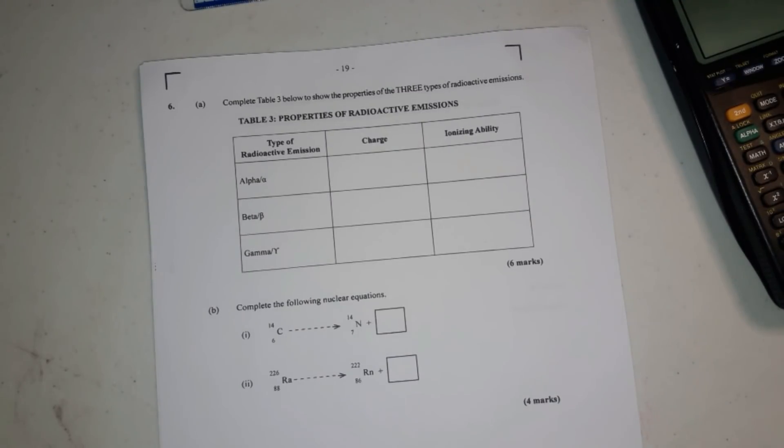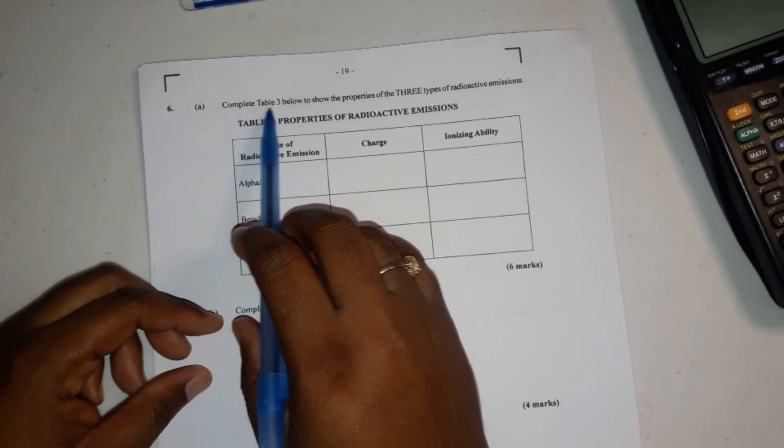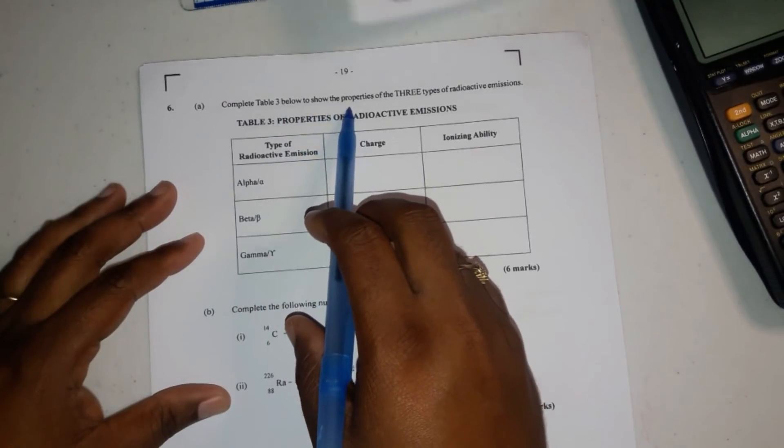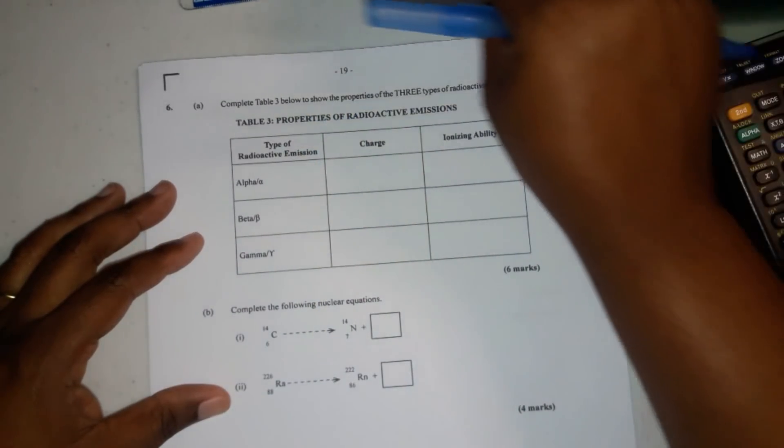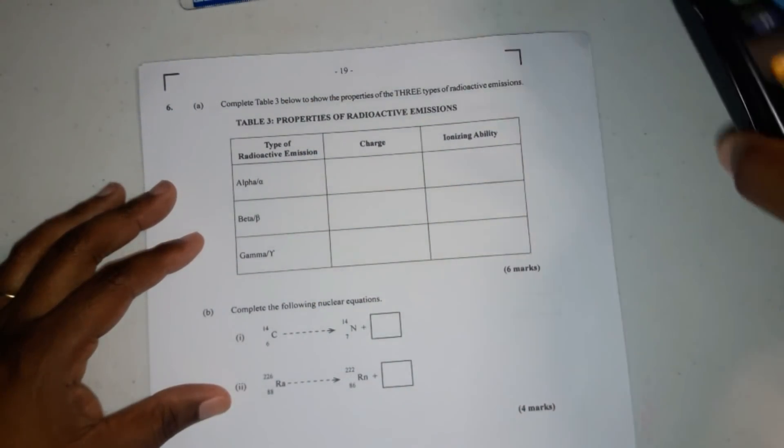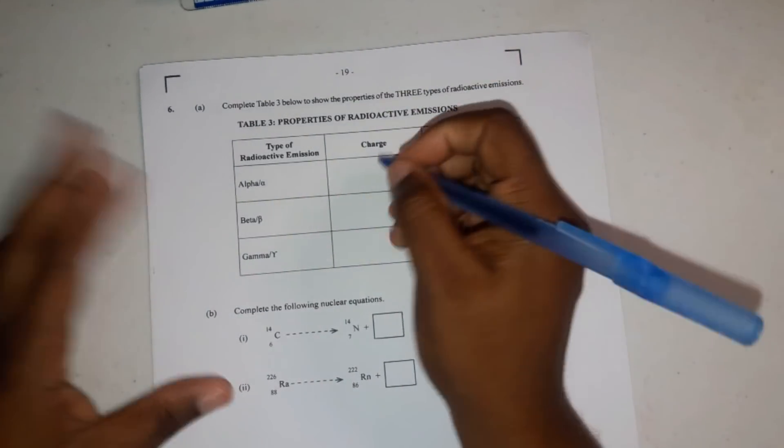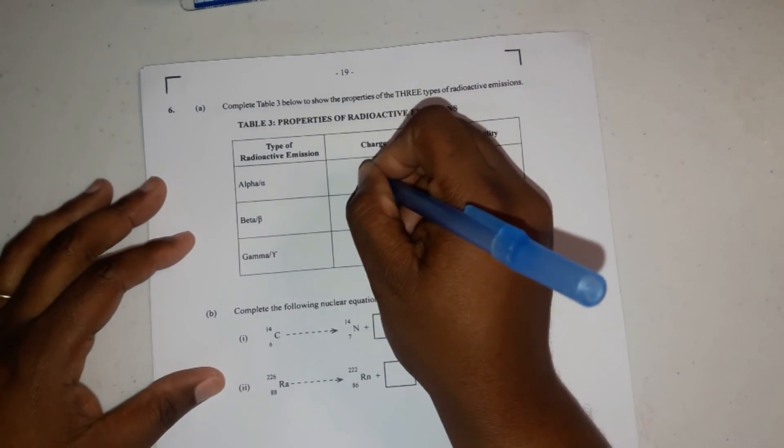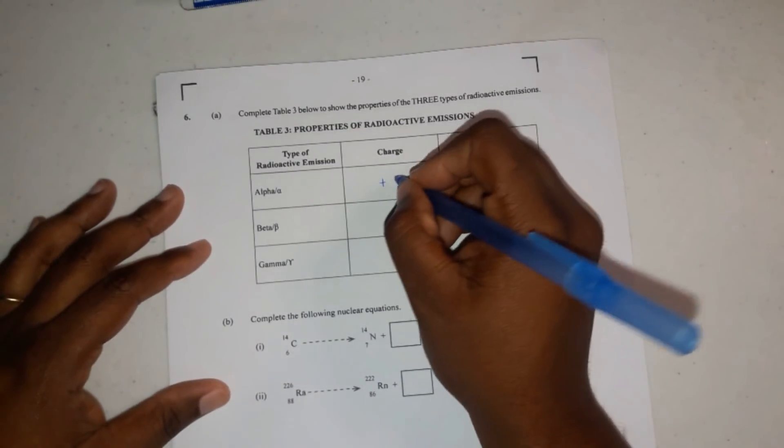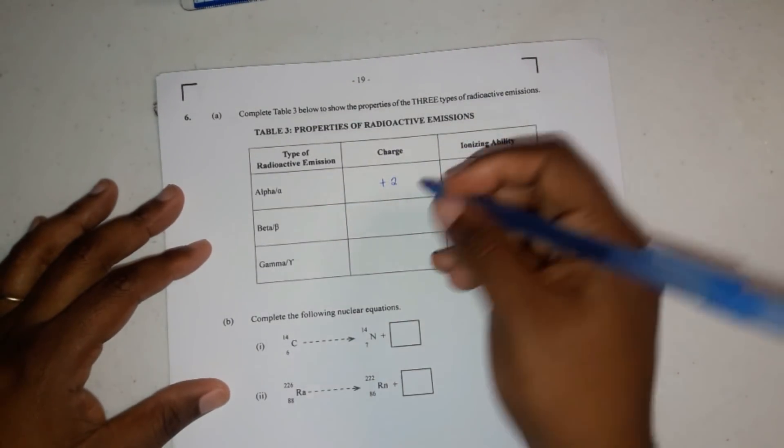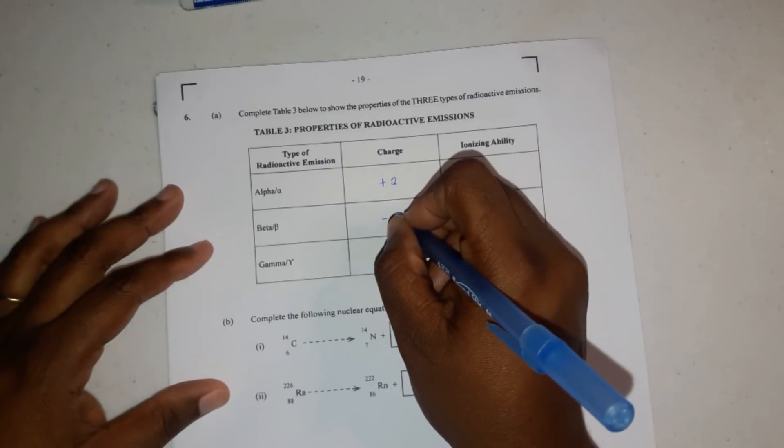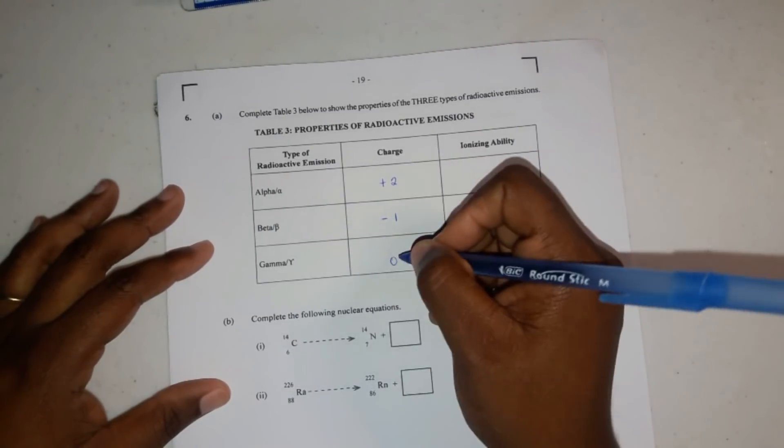And we're going to start with, it says complete table 3 below to show the properties of the three types of radioactive emissions. So this is the charge. Okay, so the charge for alpha particle is plus 2, beta is negative 1, and gamma is 0.